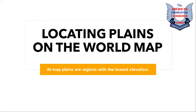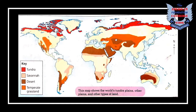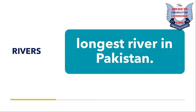Locating plains on the world map: plains are regions with the lowest elevation on the map. Elevation is the height of a geographic location above or below a fixed reference point. Using a colored key on the map, you can locate different tundra, savannas, deserts, and temperate grasslands. The Indus is the longest river in Pakistan — 3,180 kilometers long — and its plains make up 20 percent of Pakistan's total area.